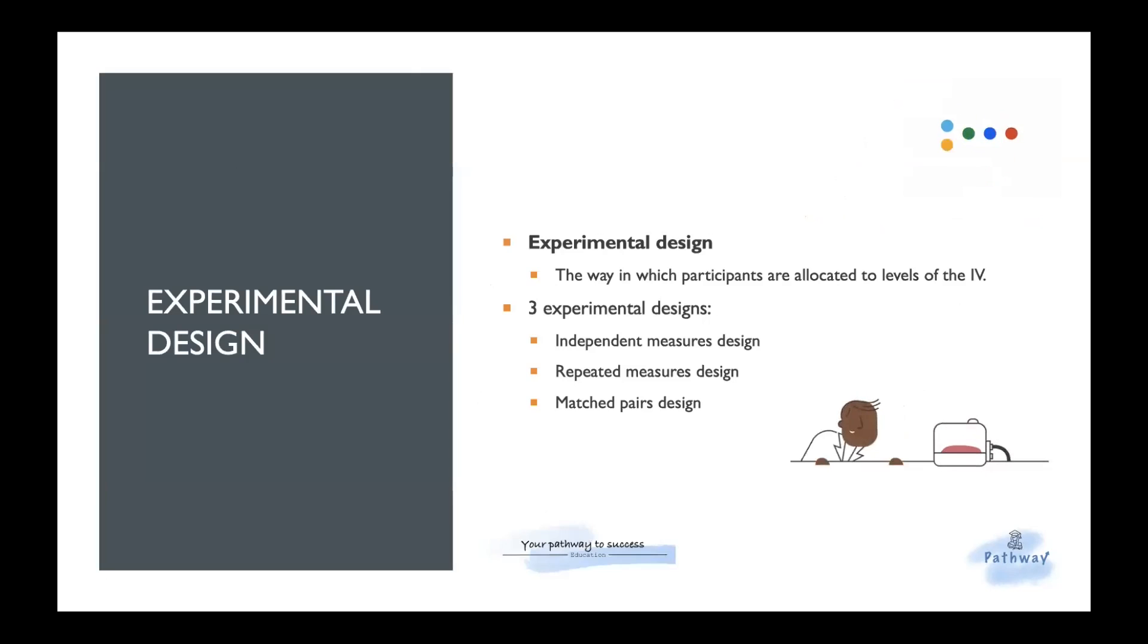So now we're going to talk about experimental design. Experimental design is basically the way that participants are used in different levels of the independent variables. They may be allocated to all or only one of the levels of independent variable. There are three experimental designs: the independent measures design, repeated measures design, and matched pairs design. It's pretty scientific so far, isn't it?